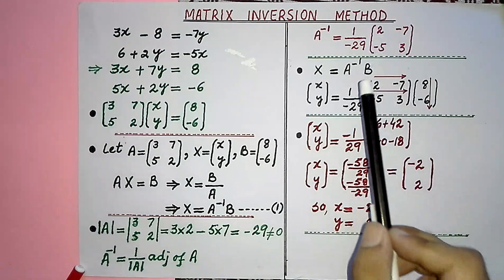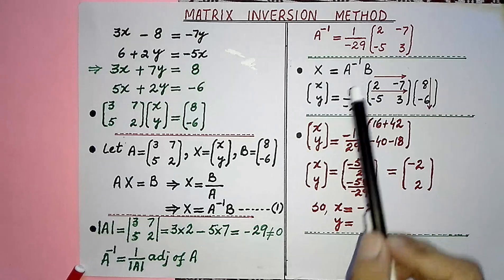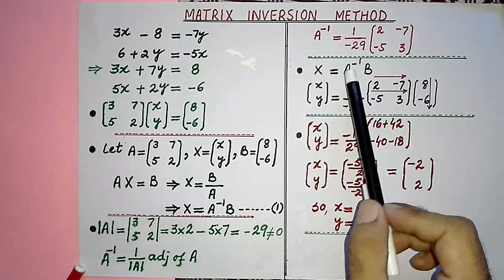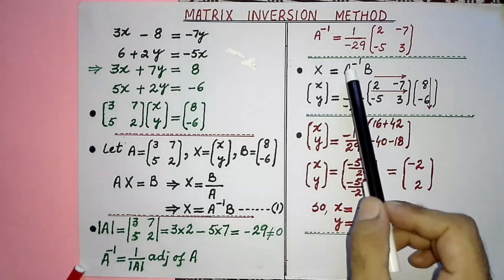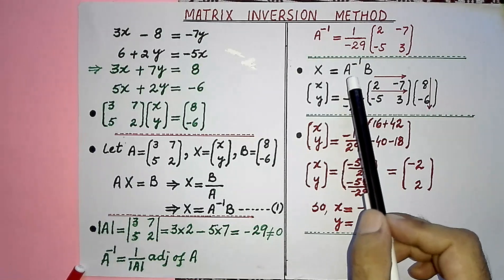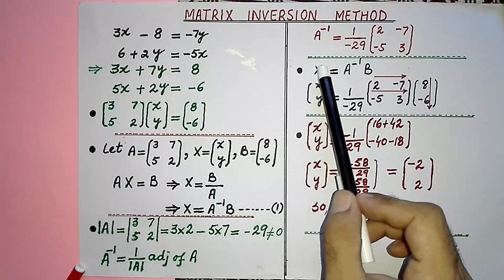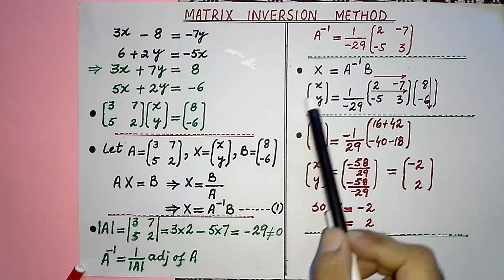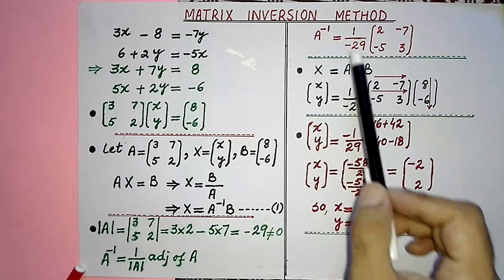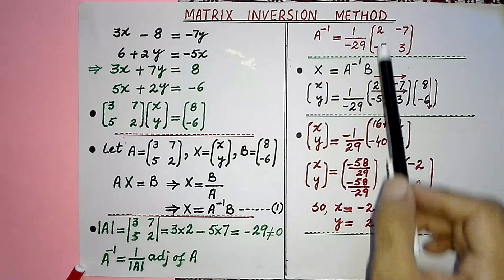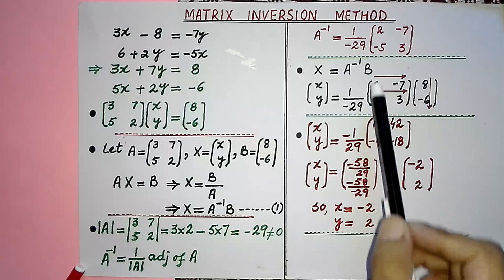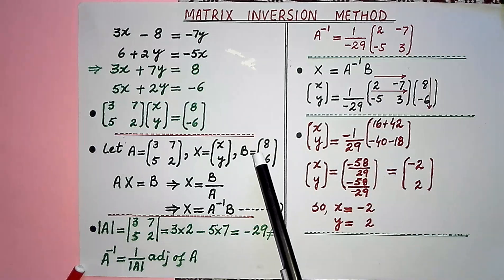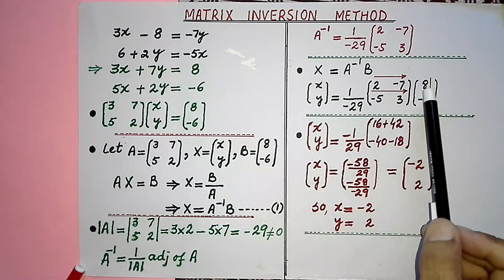In the fourth step, we take the formula and write it back in matrix form. In place of X we write the matrix of variables, in place of A inverse we write its value, and in place of B we write the matrix of constants.